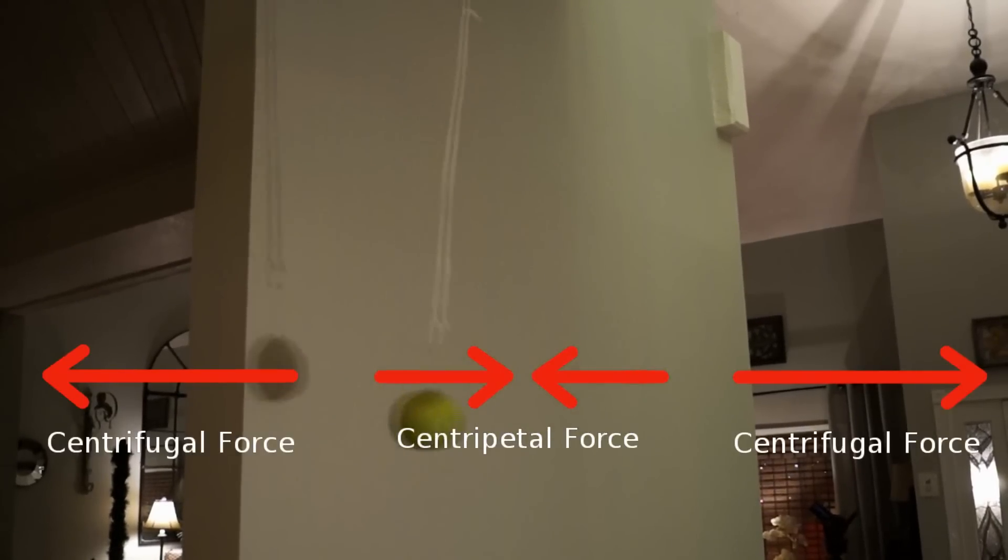So the string is pulling it in, but it wants to go out. So that results in a circle. So we have a balance of the centrifugal force and the centripetal force.